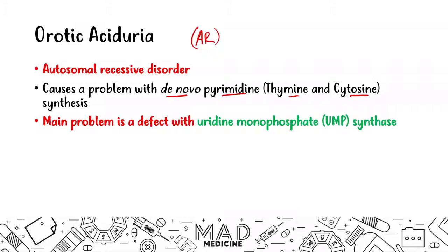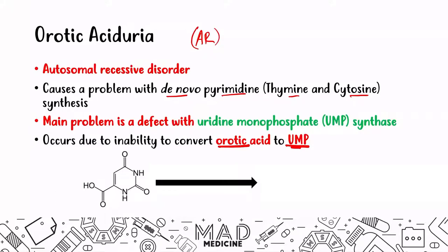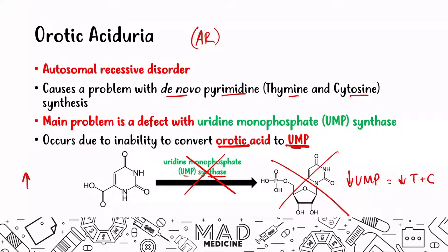UMP synthase is the main enzyme that is disrupted. When you have an issue with UMP synthase, you're not going to be able to convert orotic acid to UMP. Orotic acid is converted to UMP via UMP synthase. If this is not working, you're not going to have any UMP — your UMP levels will be low, which means your thymine and cytosine levels will be low — but you're going to have high orotic acid levels. That's how you get orotic aciduria.